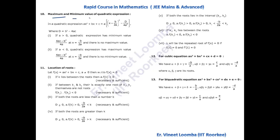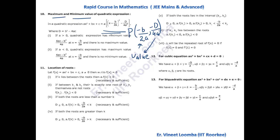An important topic: the maximum and minimum value of a quadratic expression. Remember point P with coordinates (−b/2a, −D/4a), where D is the discriminant. The maxima or minima always occur at x = −b/2a, and the maximum or minimum value is −D/4a. You don't need to use the completing-the-square method — just remember this point P.